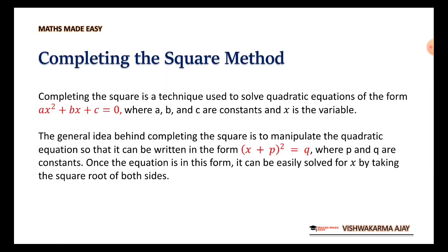Completing the square method — let's know the theory about it. Completing the square is a technique used to solve quadratic equations of the form ax² + bx + c = 0, where a, b, c are constants and x is a variable.